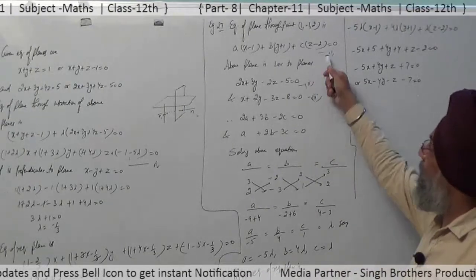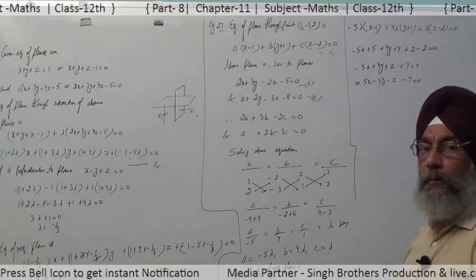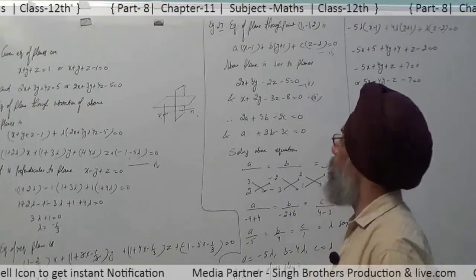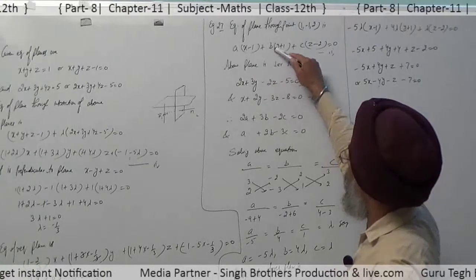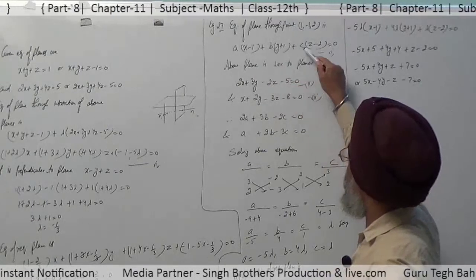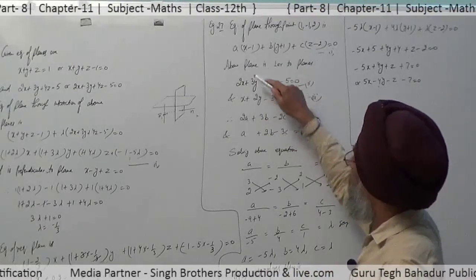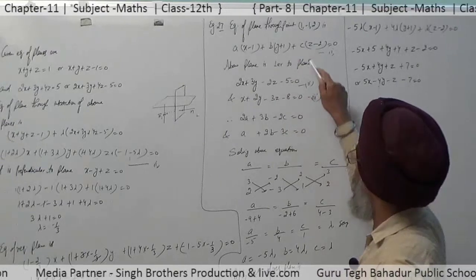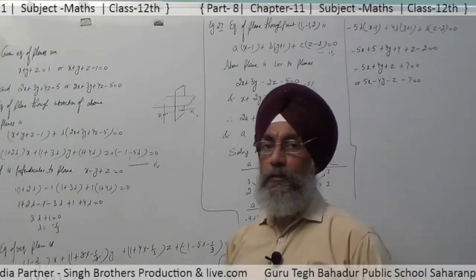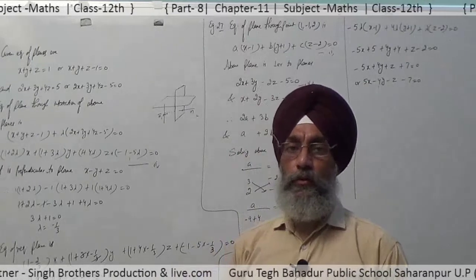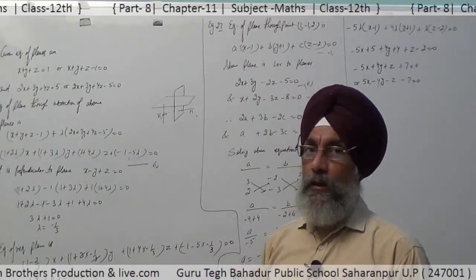This plane is perpendicular to both given planes. So multiplying corresponding direction ratios: 2a + 3b - 2c = 0, and a + 2b - 3c = 0. The sum of products of corresponding direction ratios of two planes equals zero if they are perpendicular to each other.